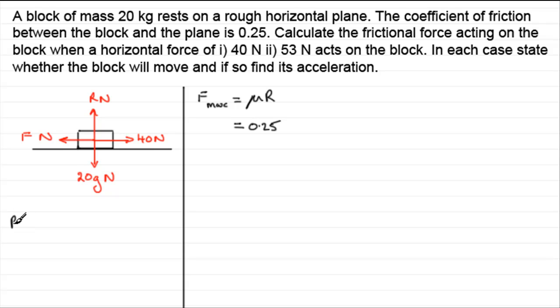And to do that, we would resolve in the upward direction, in the direction of r. And if we resolve upwards, we've got r minus 20g equals 0. These two forces of 40 and f do not come into this equation because we're resolving in a perpendicular direction to what these forces are. It equals 0 because the particle is in equilibrium relative to the plane here.